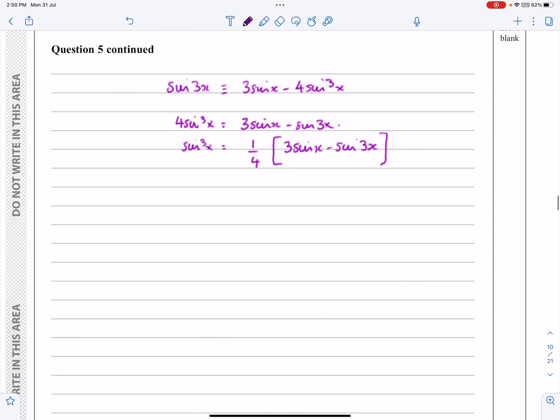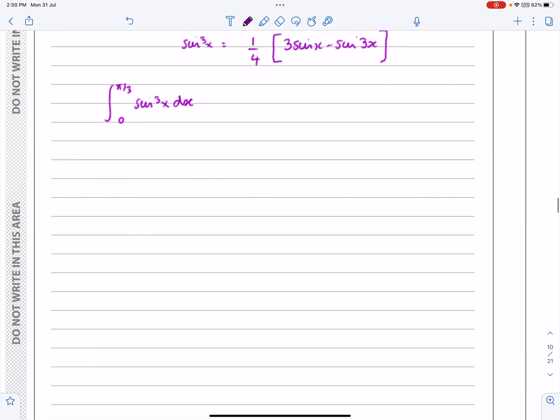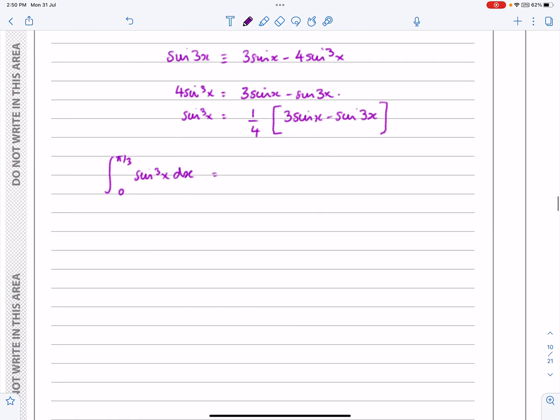And so that's what I'm then going to be integrating. So the integral between pi over 3 and 0 of sine cubed x dx is equal to, let's take that quarter outside, the integral between pi over 3 and 0 of 3 sine x minus sine 3x dx.